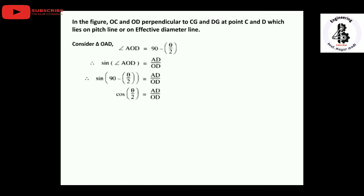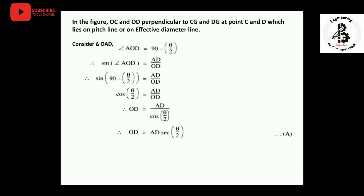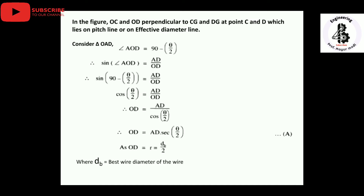Since sine(90 - θ/2) converts to cos(θ/2), we get: OD = AD / cos(θ/2), which simplifies to OD = AD · sec(θ/2). This will be indicated as equation number A. Now OD represents the radius, or D/2, and for the best wire size this is indicated as DB/2, where DB is the best wire diameter.